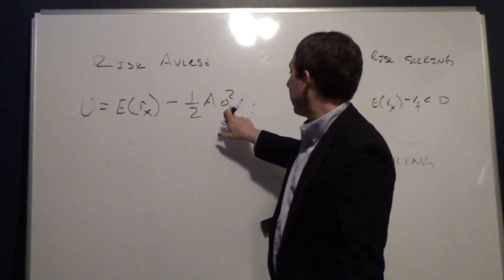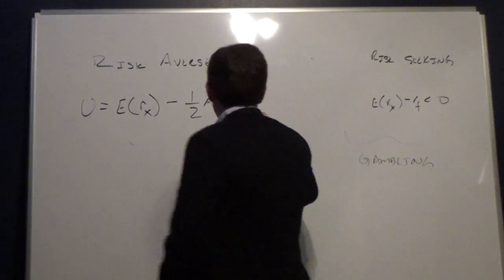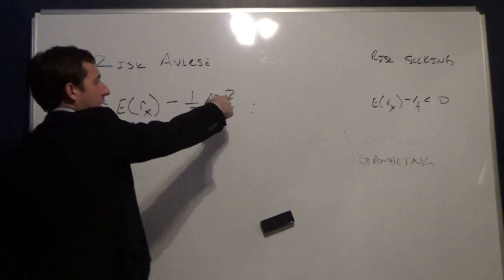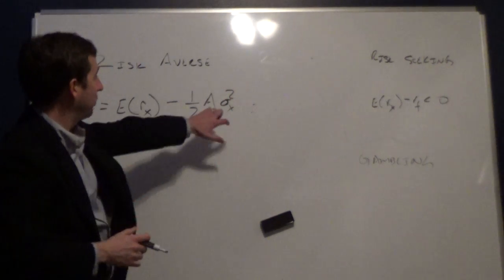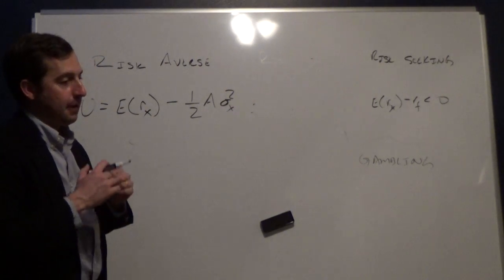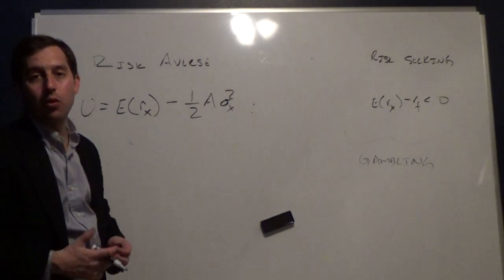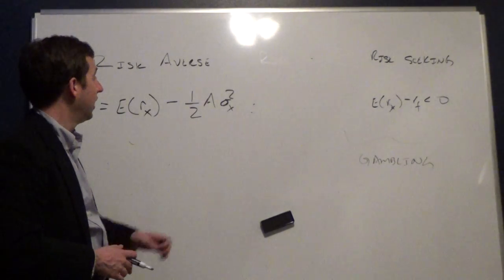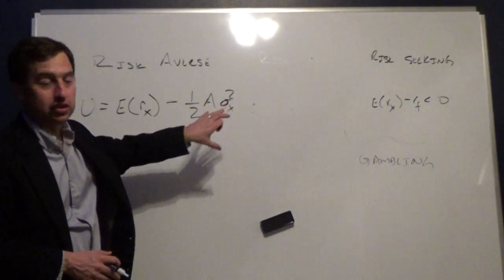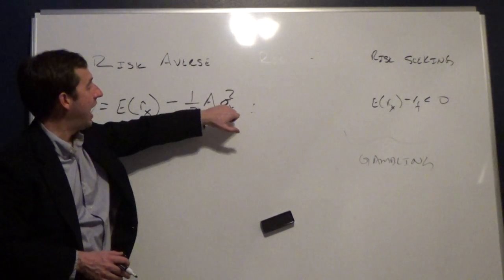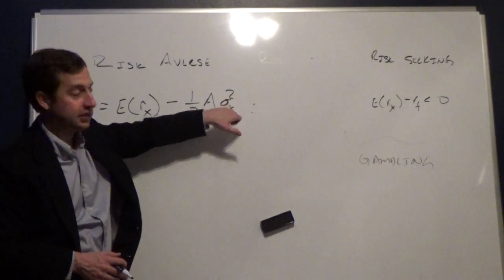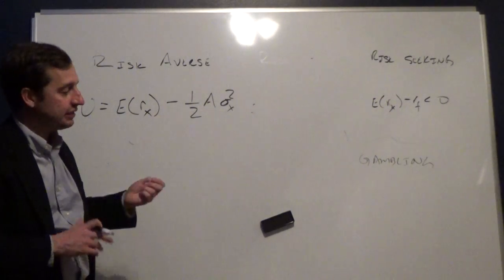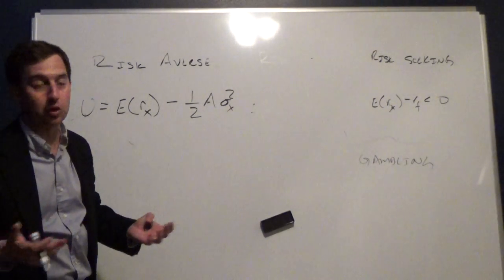Utility is decreasing in risk. The σ² term is the variance of returns — as returns have higher standard deviation and higher variance, we penalize utility, so utility gets lower as risk increases. A is the degree of risk aversion, and this is personal to you.